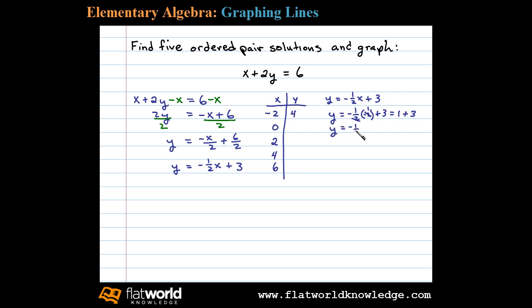When you substitute in 0, 0 times anything is 0 so negative 1 half times 0, 0 plus 3 is 3. Substituting in 2 again the 2 cancels. Negative 1 times 1 is just negative 1 plus 3 that leaves us with 2.